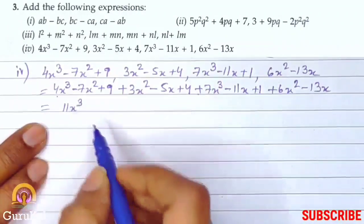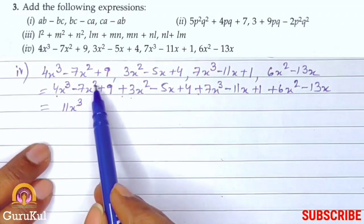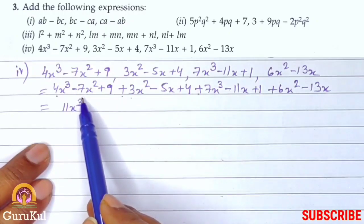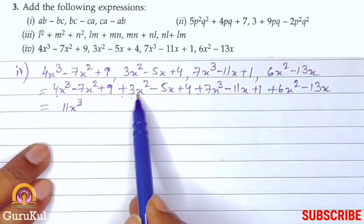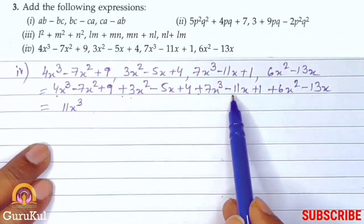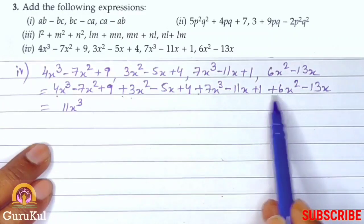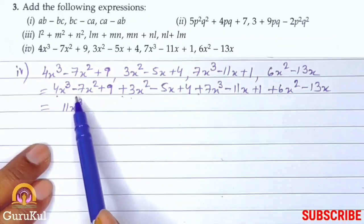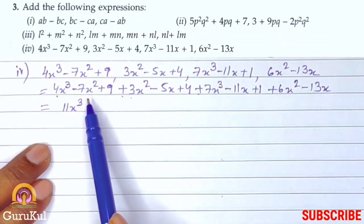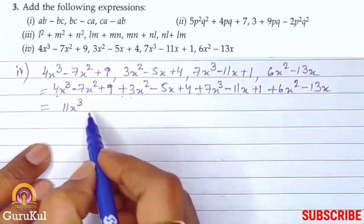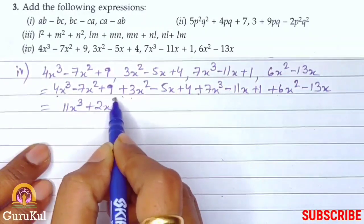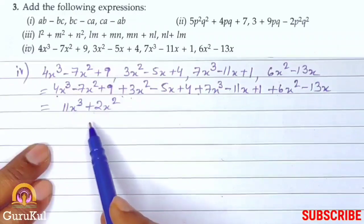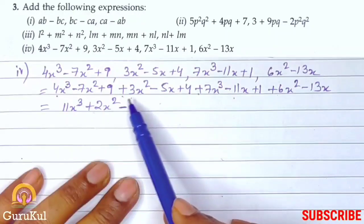So, first we will see X cube. So, your X cube is plus 4X cube. After that is plus 7X cube. That gives us 11X cube. Now, we will talk about X square. So, this is minus 7X square plus 3X square plus 6X square. So, first let's add the positive ones. So it becomes plus 9X square. From that we subtract 7X square. So, answer is plus 2X square. So X cube X square done.